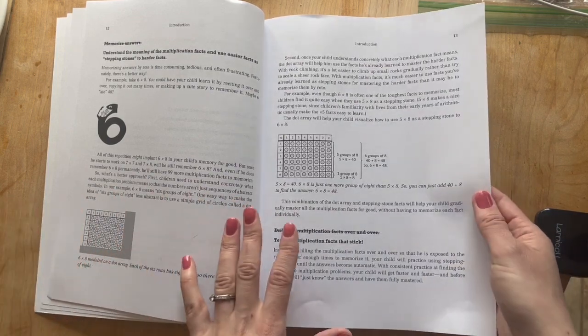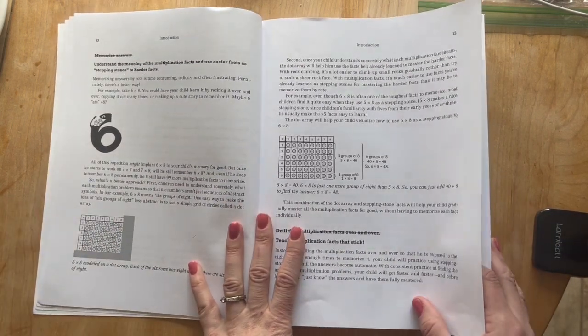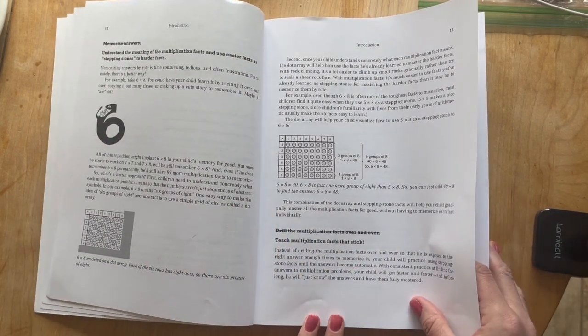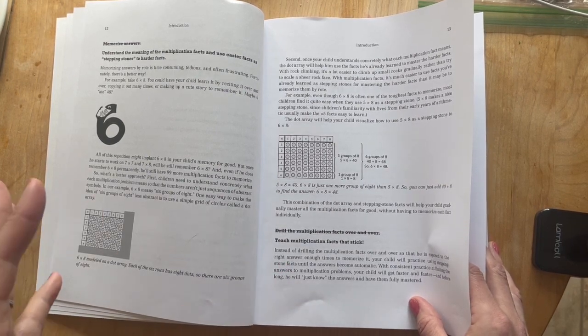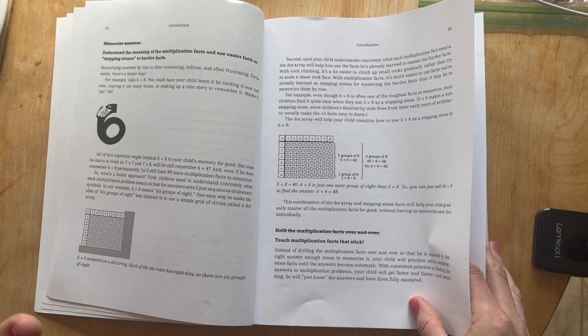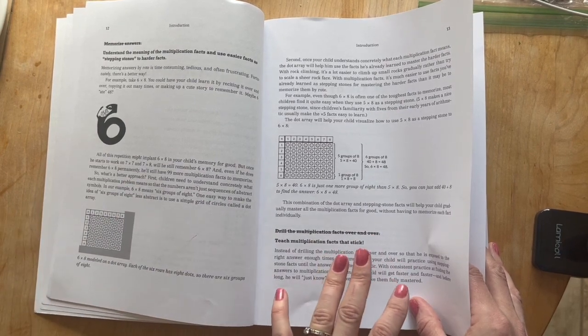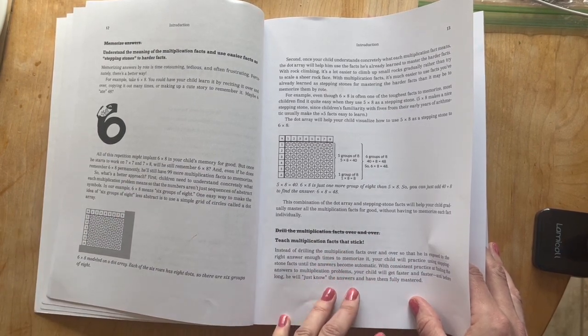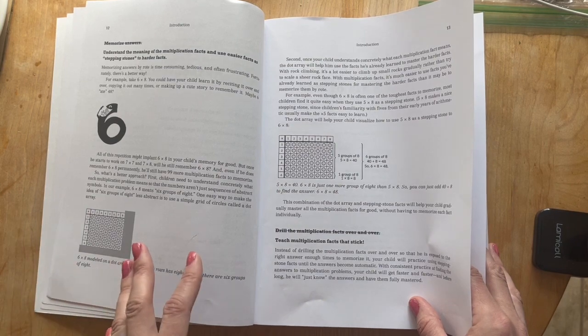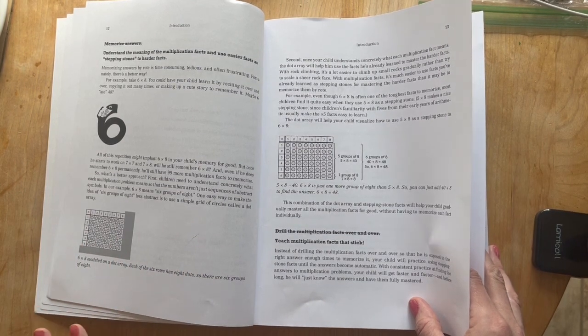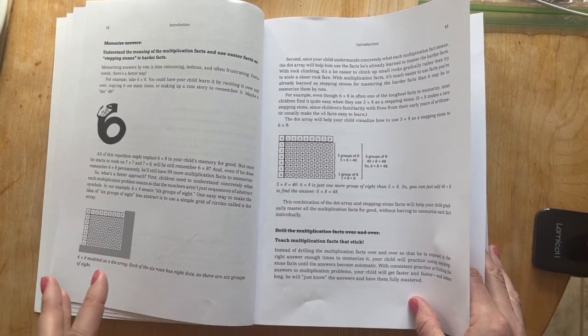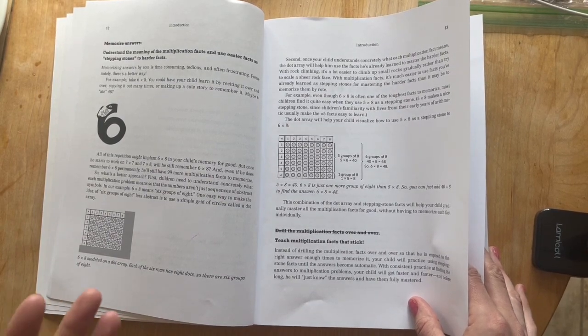So, what I'll go ahead and do first is I will show you the game boards in the back, the answer keys, and then we'll go ahead and flip through a week's worth of material so that you can see how it's laid out. Then I'll flip to another random chapter and we will do another week flip through so that you can kind of get two solid weeks' worth of what does this program look like to use.